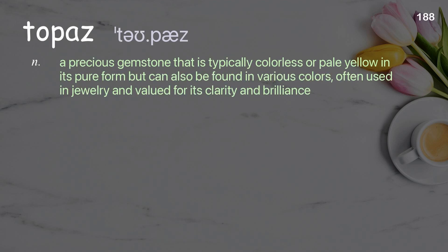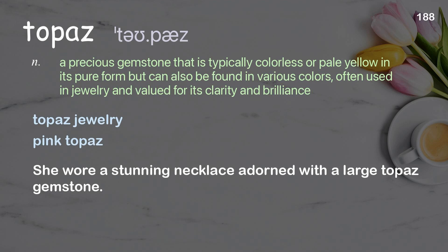Topaz: a precious gemstone that is typically colorless or pale yellow in its pure form but can also be found in various colors; often used in jewelry and valued for its clarity and brilliance. Examples: topaz jewelry, pink topaz. She wore a stunning necklace adorned with a large topaz gemstone.